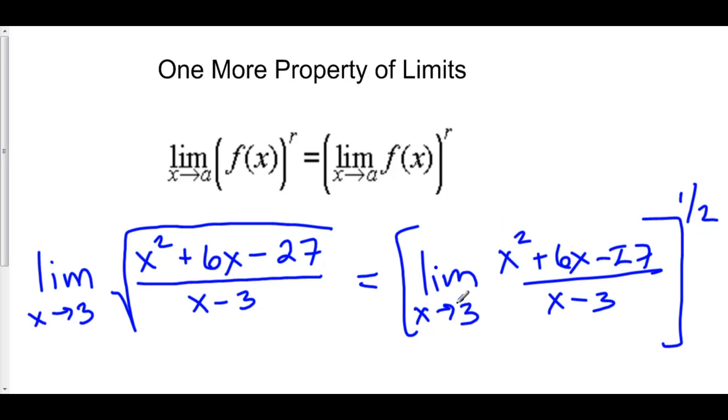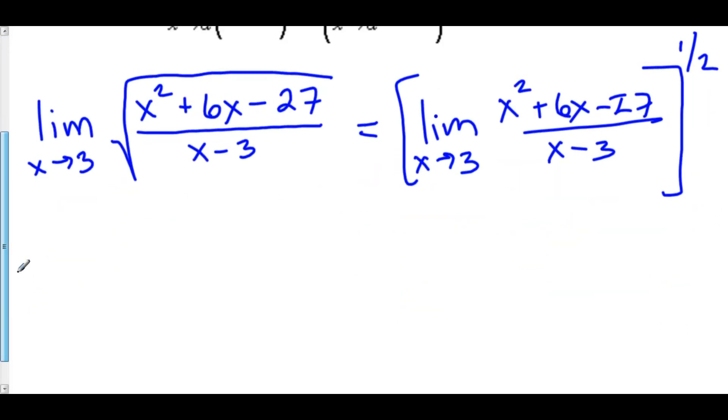In that way, we can now analyze this limit the way that we would in our three rules. Now, of course, plugging in 3 or doing all of our rules to begin with really isn't so bad, but just bear in mind that you could save the square root or whatever power you have until later. So let's analyze this. Step 1, plug it in.